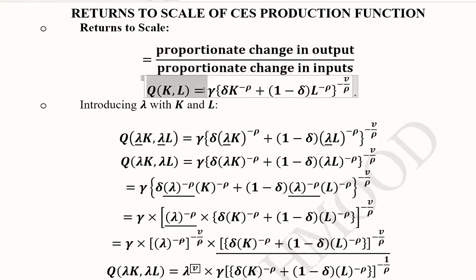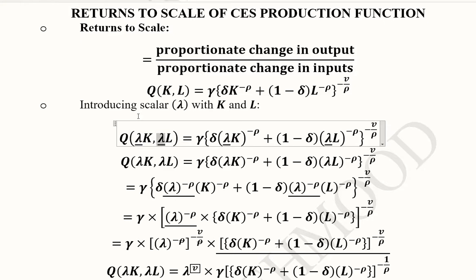This was the reminder of the returns to scale situation. Here we have the CES production function in its full-fledged form. Now we are going to do the process in which we check the homogeneity and find out about the returns to scale. We can introduce a scalar lambda in the production function wherever there is labor and capital. Lambda is introduced on both sides.